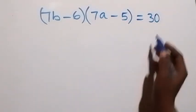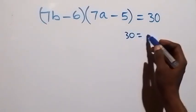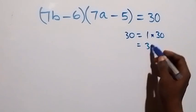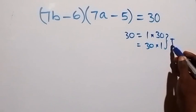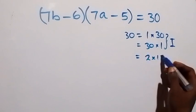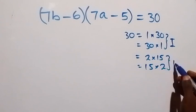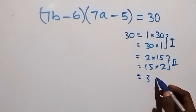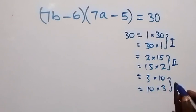We have the product of two numbers equaling 30, so these are the possible factor pair outcomes. Case 1: 30 equals 1 times 30, or 30 times 1. Case 2: 2 times 15, or 15 times 2. Case 3: 3 times 10, or 10 times 3.